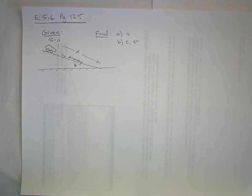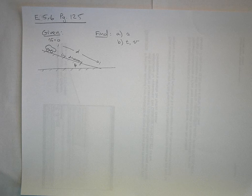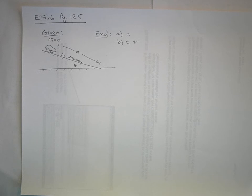Part a: Find the acceleration of the car assuming that the driveway is frictionless. Part b: Suppose the car is released from rest at the top of the incline and the distance from the car's front bumper to the bottom of the incline is d. How long does it take the front bumper to reach the bottom and what is the car's speed as it arrives there?